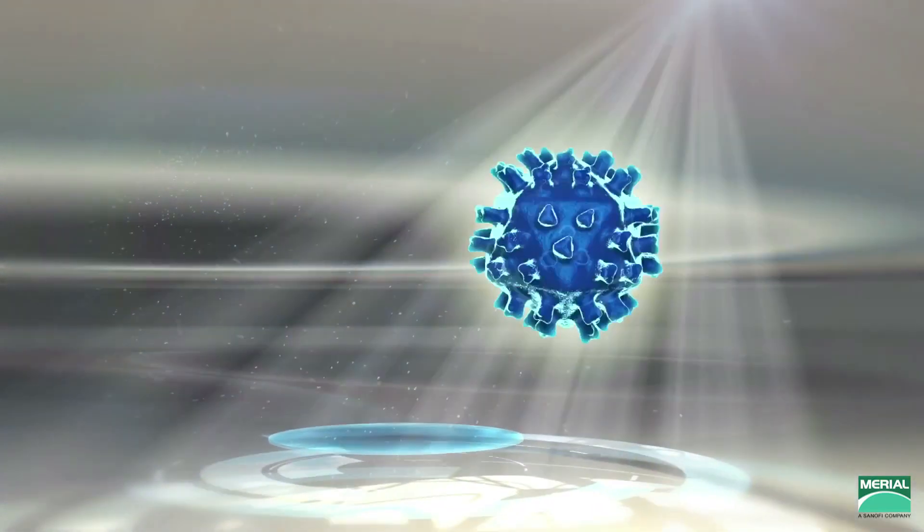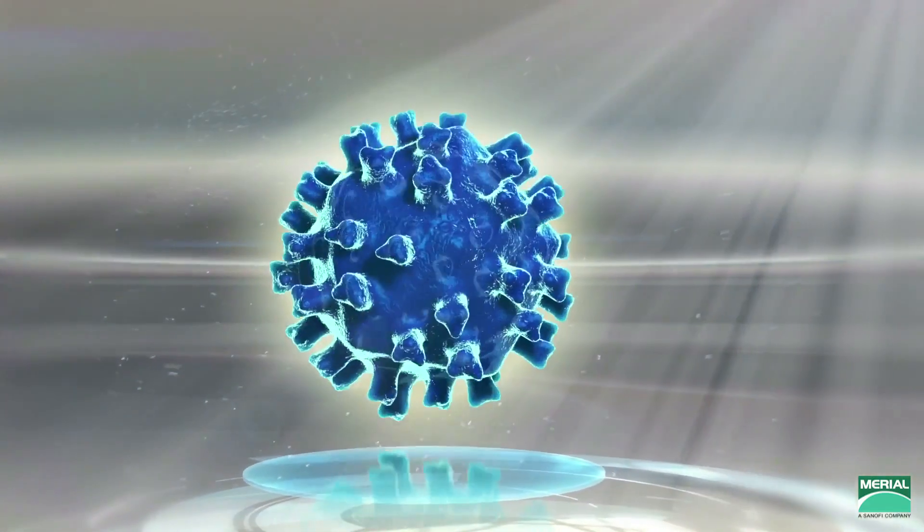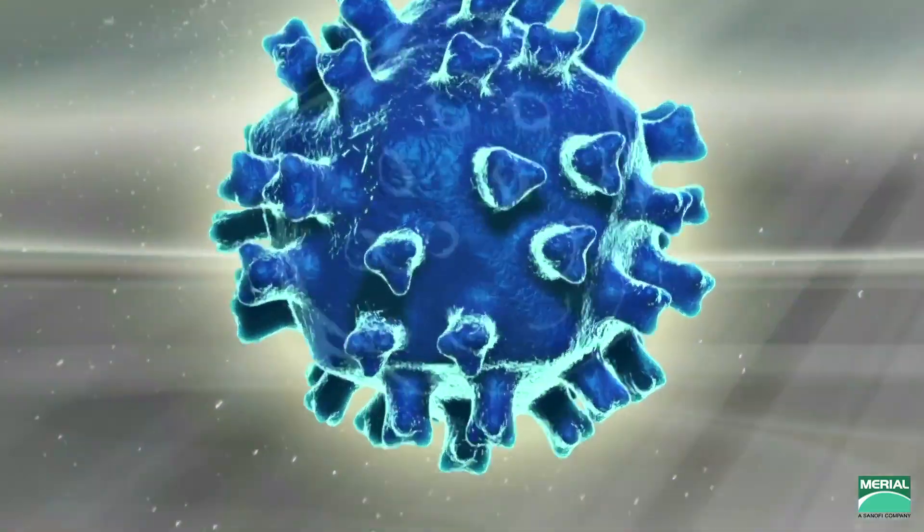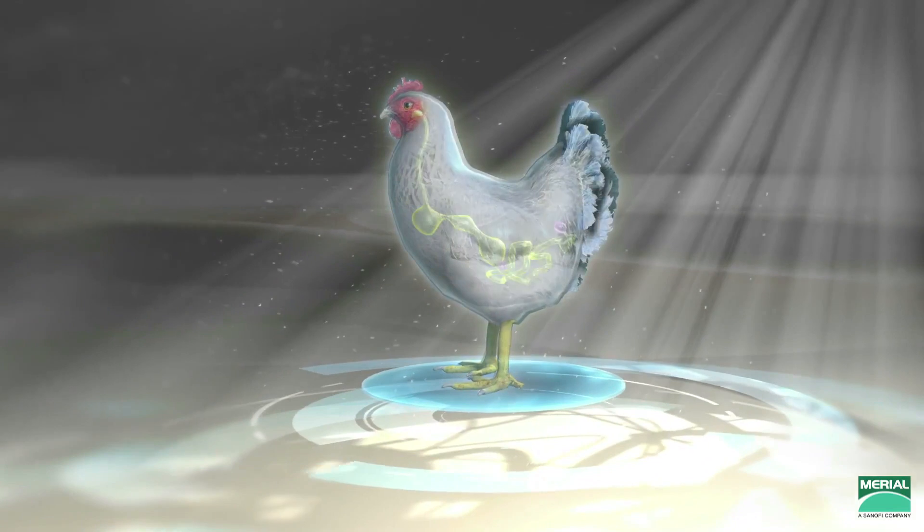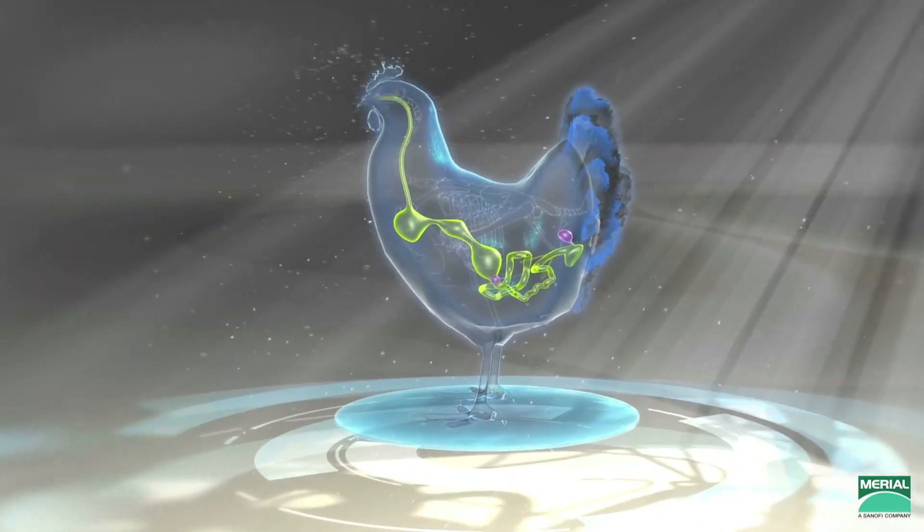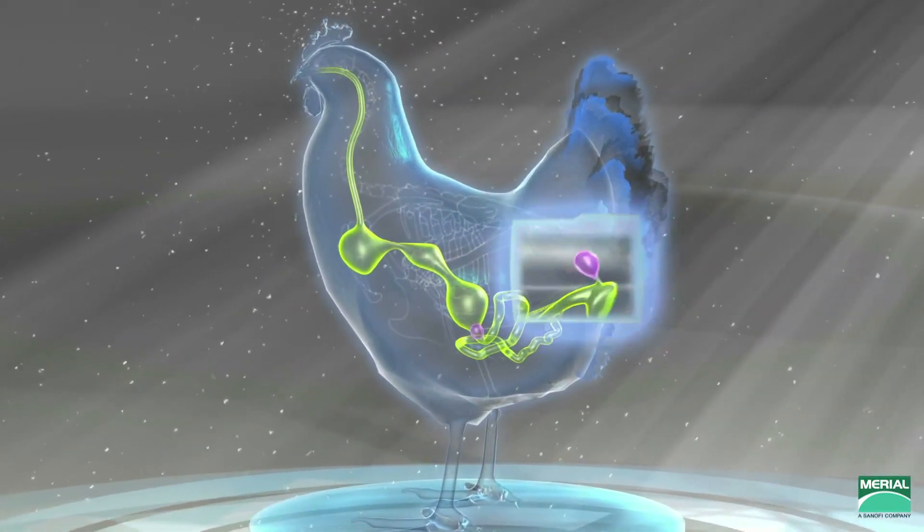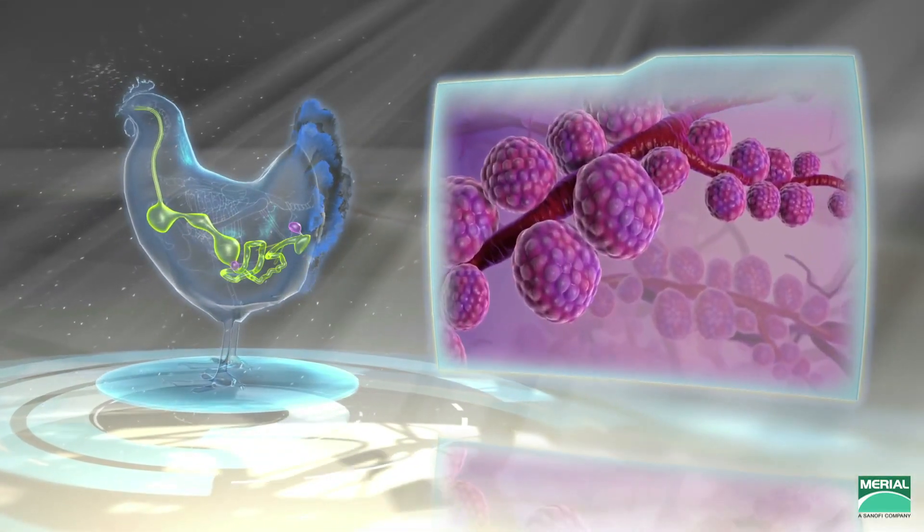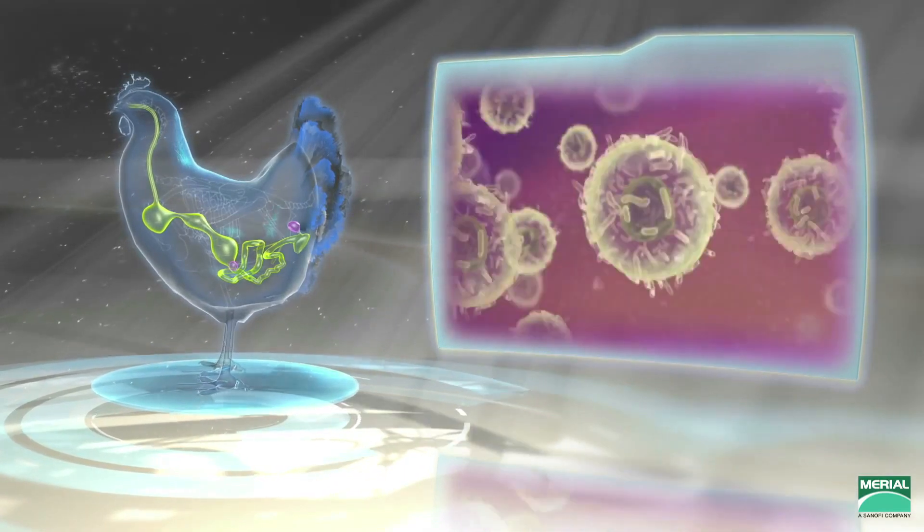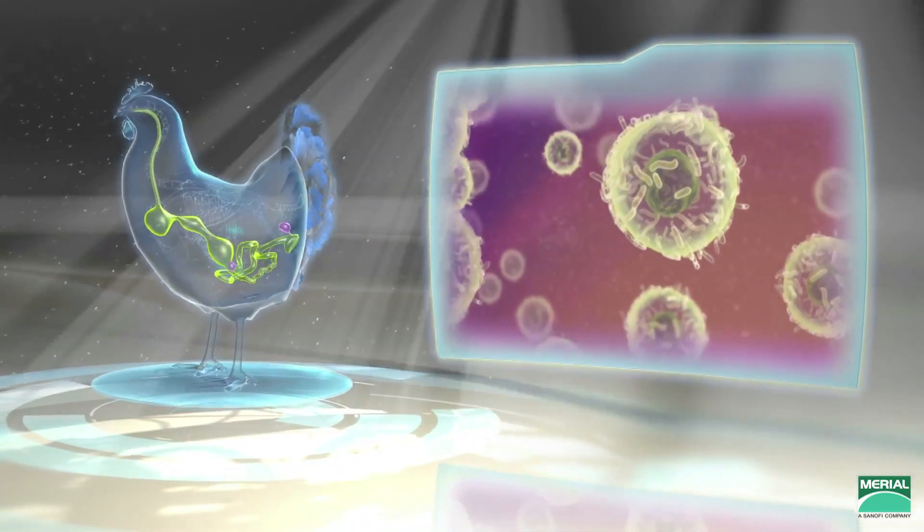The disease is caused by the IBD virus. The main site of IBDV replication is the Bursa of Fabricius, a critical primary lymphoid organ in birds that contains lymphoid follicles where B lymphocyte progenitors multiply and mature.